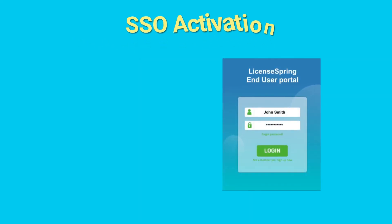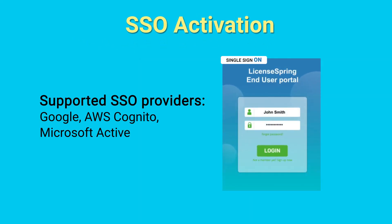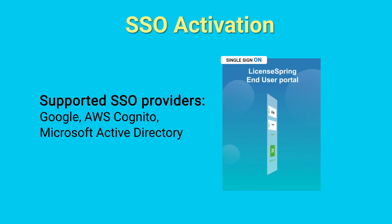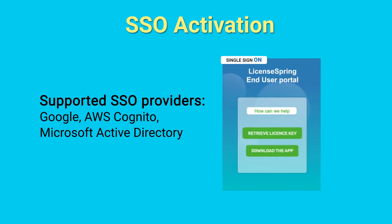SSO: as part of the user-based licenses, the software vendor can enable single sign-on, where users can be assigned through Microsoft Active Directory, Google, or Amazon Cognito, for example.